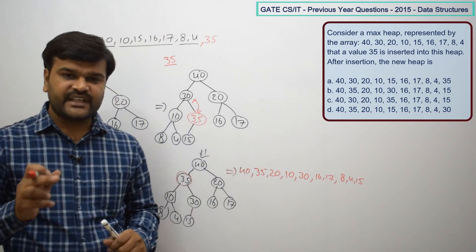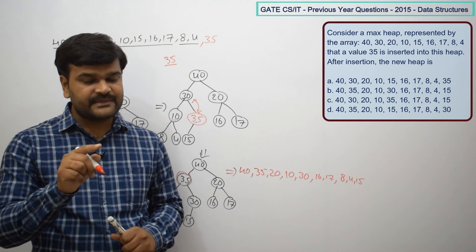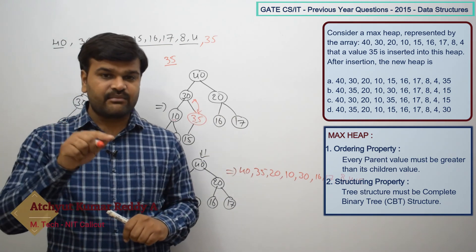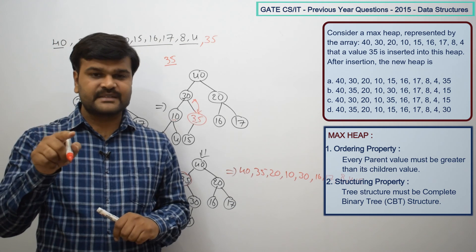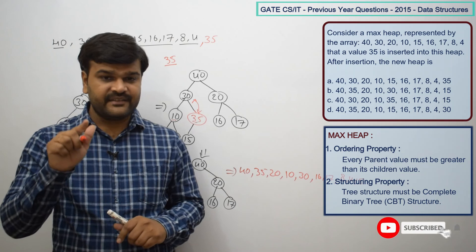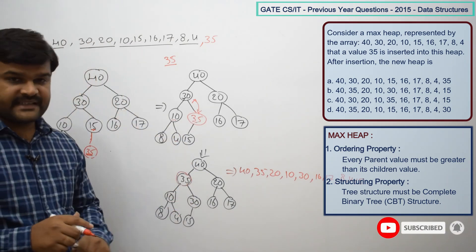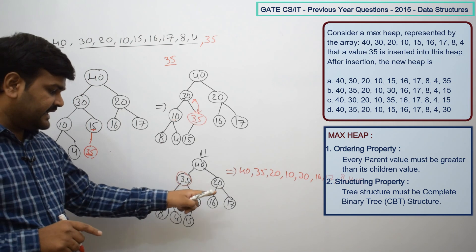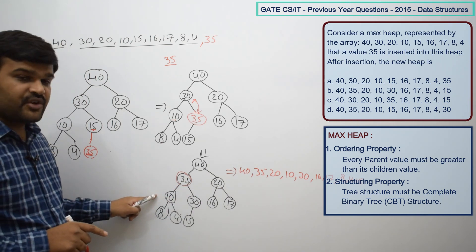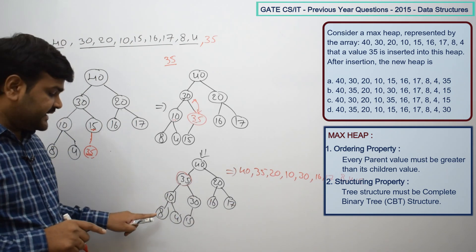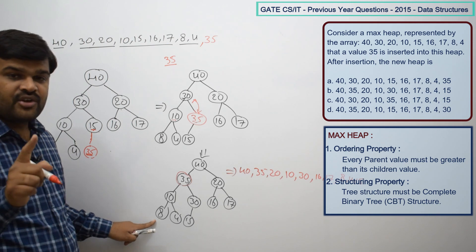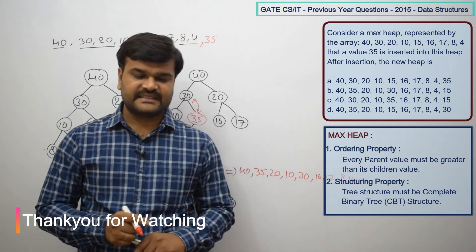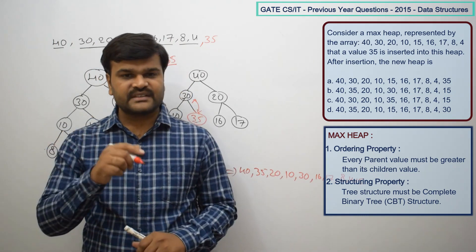To summarize: a max heap must follow ordering property — every node must be greater than its children — and structuring property — the tree must be a complete binary tree, meaning every level is fully filled except possibly the last level, where nodes exist from left to right. Based on this, option B is the correct answer for this question.